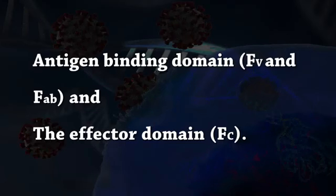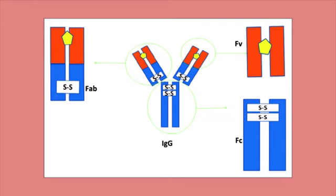The domains of the antibodies are the functional regions of the antibody. There are two types of domains: antigen-binding domains (FV and FAB) and effector domain (FC). Antigen-binding domains are the variable domains, and the effector domain is the constant domain. Each light and heavy chain of the antibody consists of variable domains and one constant domain. The FV and FAB are heterodimers. The FV region of the light and heavy chain consists of variable domains.